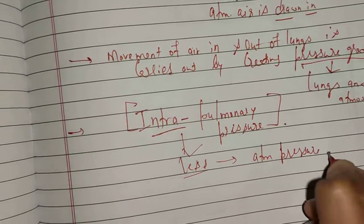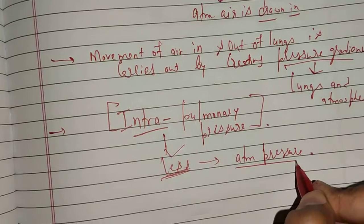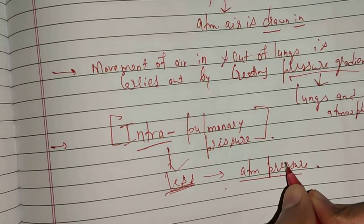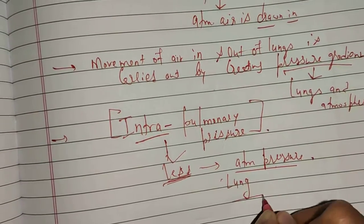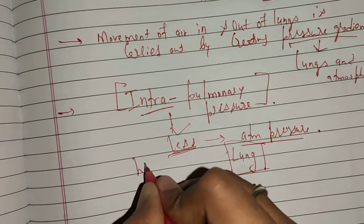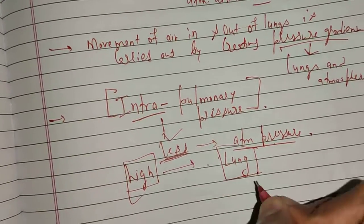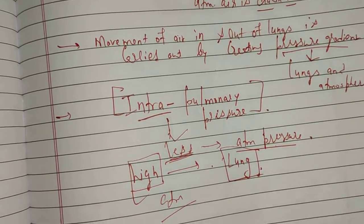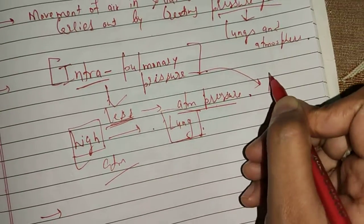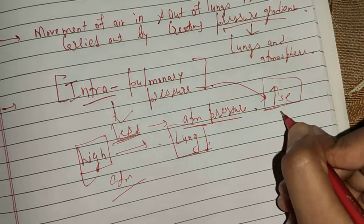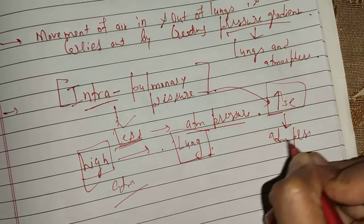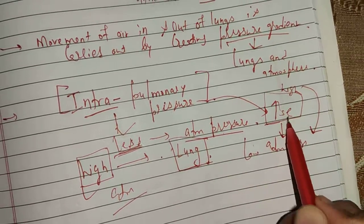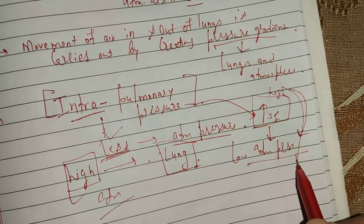When intra-pulmonary pressure is less compared to atmospheric pressure, a negative pressure is present in the lungs. After this negative gradient develops, air moves from high pressure to low pressure - that is, air enters from the atmosphere into the lungs. Similarly, expiration occurs when intra-pulmonary pressure becomes high as compared to atmospheric pressure, causing carbon dioxide to move out of the body.